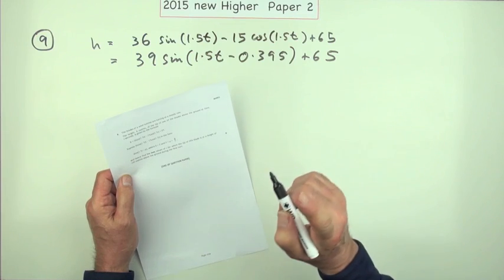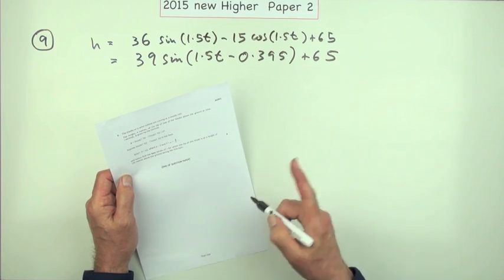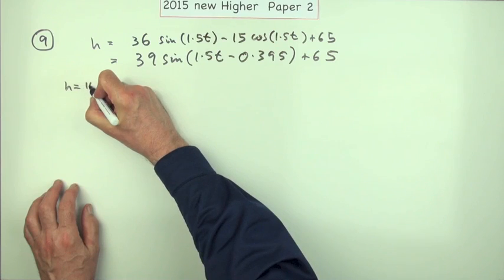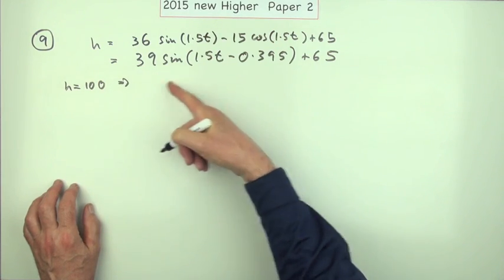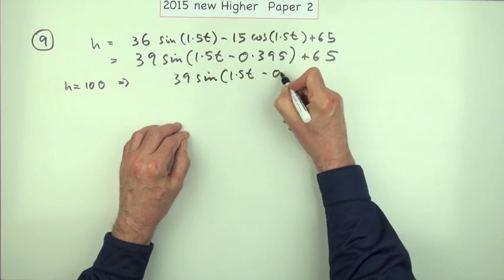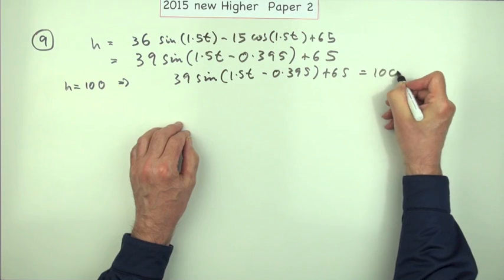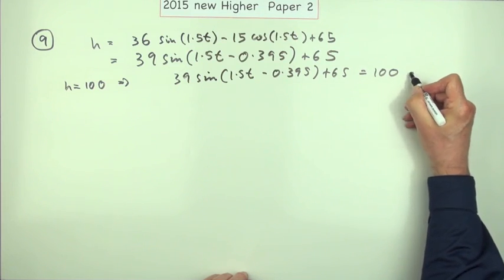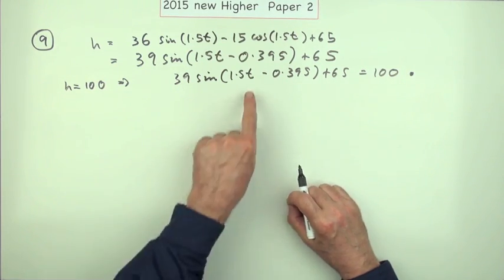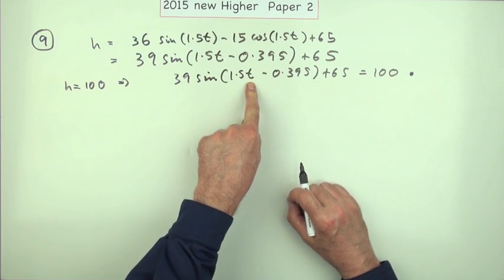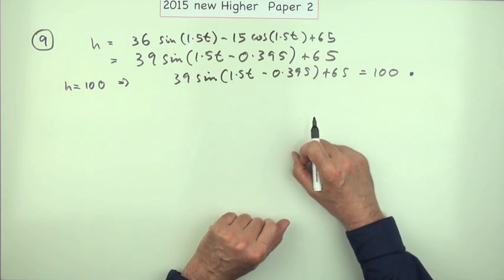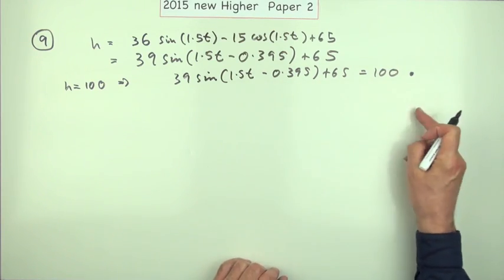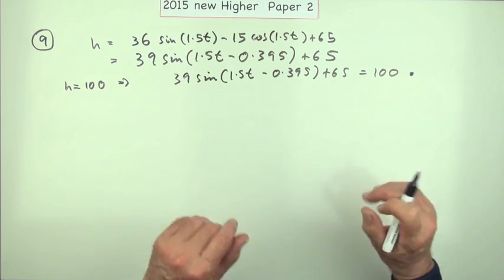The second part says: hence find the two values of T when the tip of the blade is at a height of 100. That means if H = 100, then the expression should equal 100 — knowing that is worth a mark. It's straightforward to solve since there's only one mention of T. Get rid of the 65, the 39, the sine, the 0.395, and finally the 1.5, each step appropriately.